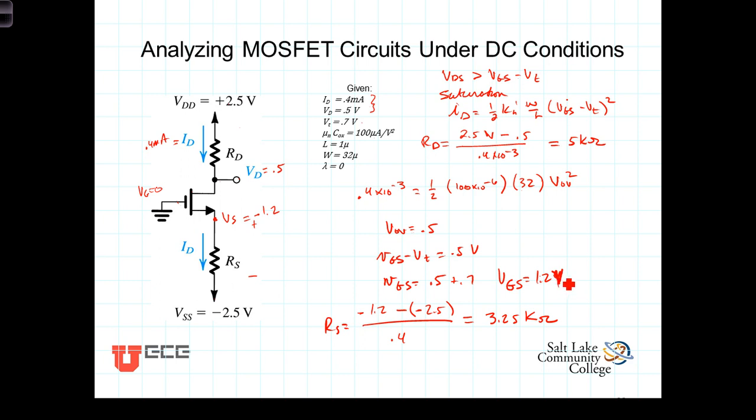and V-DS, then, would be what? We're at 0.5, and we drop down to a negative 1.2, so that would be V-DS, just while we're at it, let's go ahead and calculate it. V-DS would be V-sub-D minus V-sub-S, which would be 0.5 minus a minus 1.2, and V-DS would equal 1.7 volts.